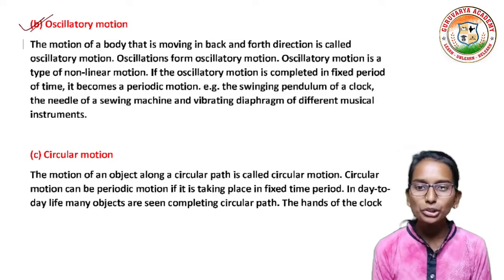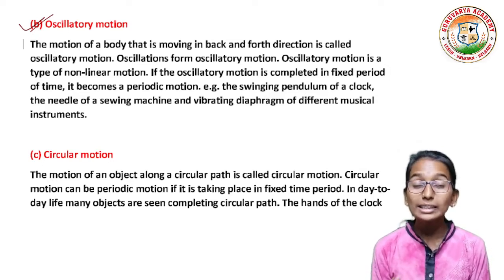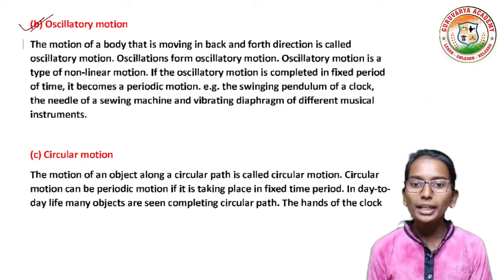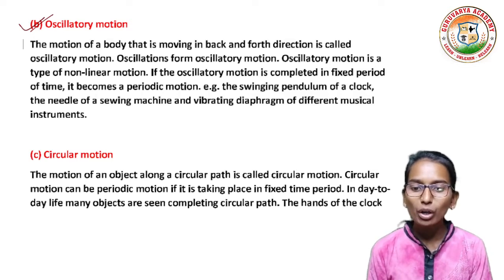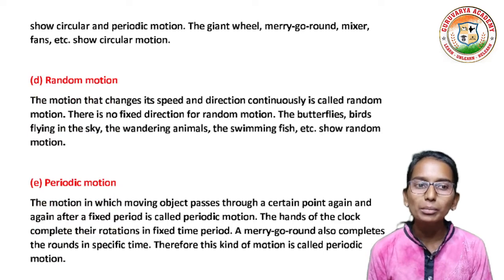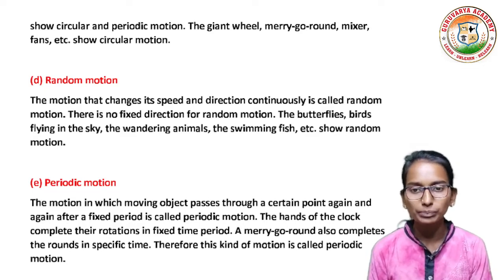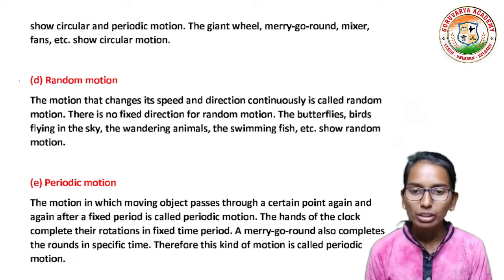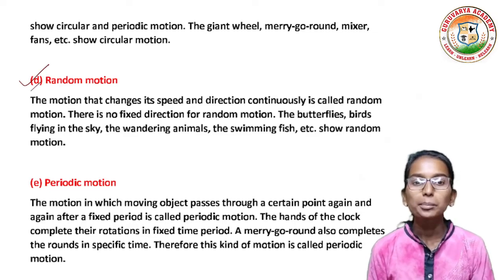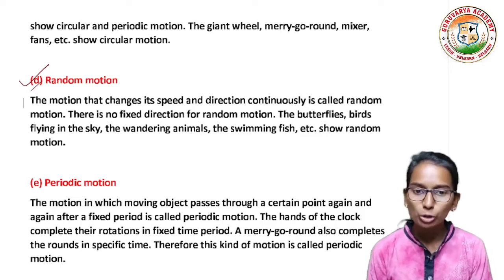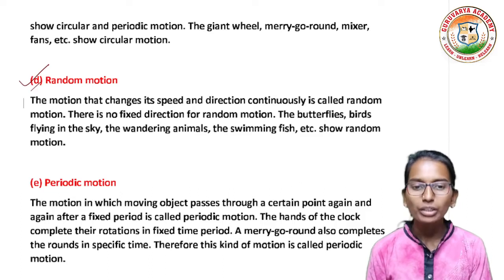The motion of an object along a circular path can be periodic motion if it takes place in a fixed time period. In day-to-day life, many objects are seen completing a circular path. The hands of a clock show circular and periodic motion. The giant wheel, merry-go-round, mixer, fans, etc. show circular motion. The motion that changes its speed and direction continuously is called random motion. There is no fixed direction for random motion.